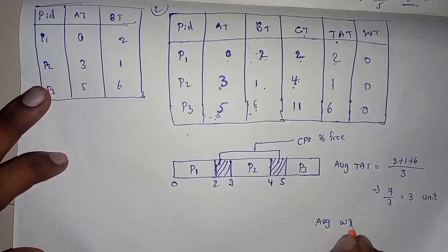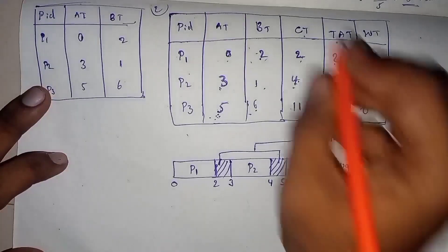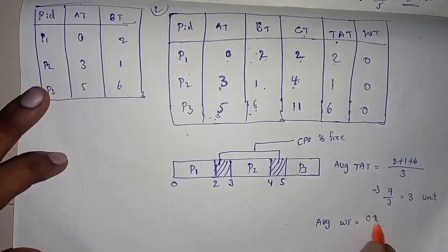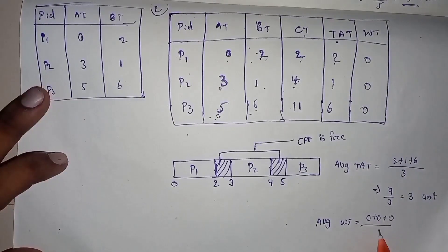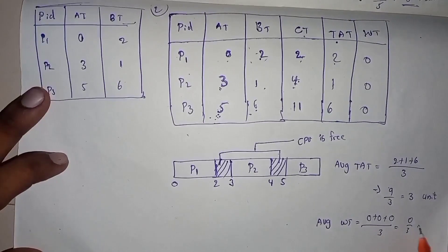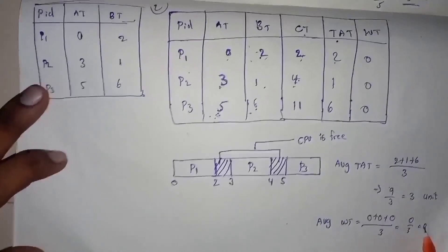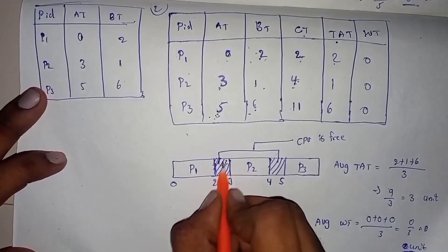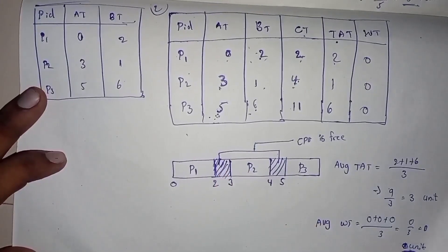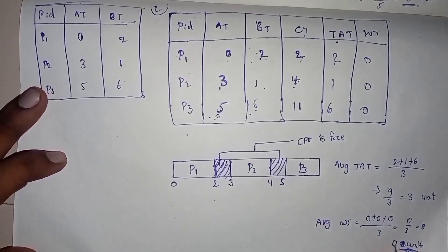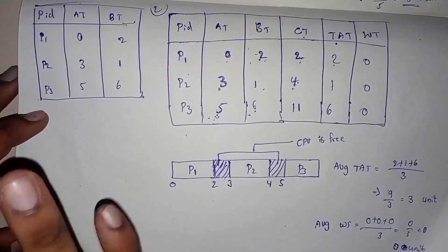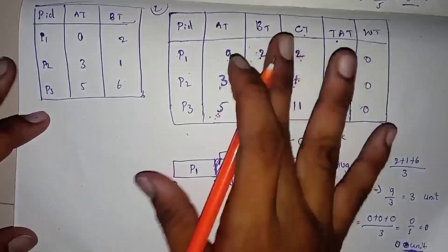Average waiting time: waiting time column is 0 plus 0 plus 0, divided by 3. So 0 by 3 — waiting time is 0. Waiting time is equal to max. So waiting time is 0. This process is complete.